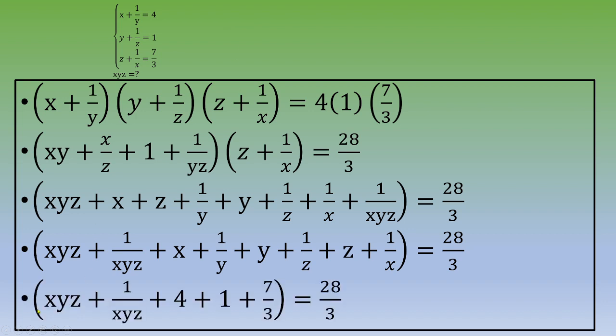We've got xyz plus 1 over xyz plus 4 plus 1 plus 7 thirds equals 28 thirds.